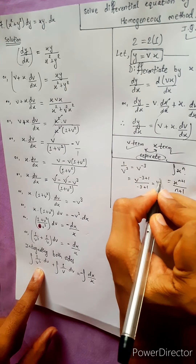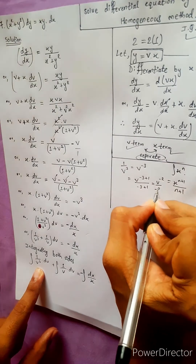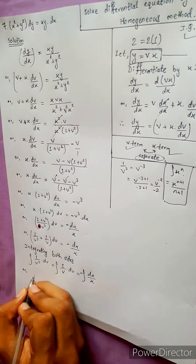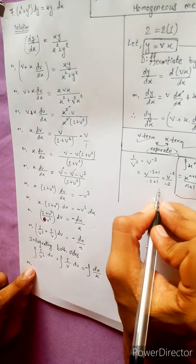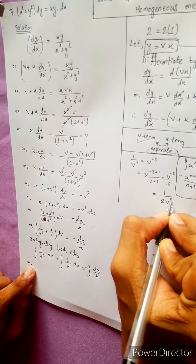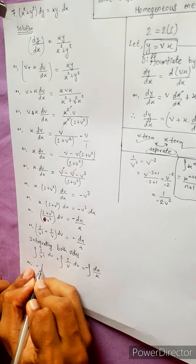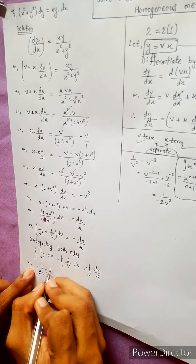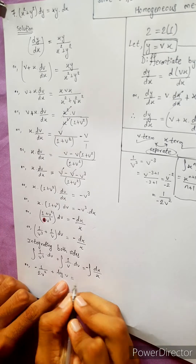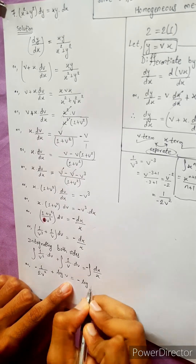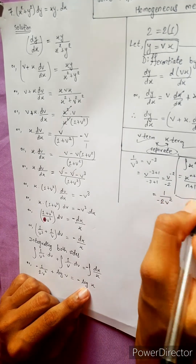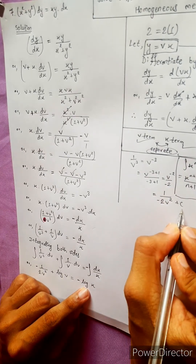This equals to v to the power minus 2 divided by minus 2, which equals to 1 by minus 2v squared. So minus 1 by 2v squared plus log v equals to minus log x. 1 by v equals to log v, 1 by x equals to log x, plus integral constant C.